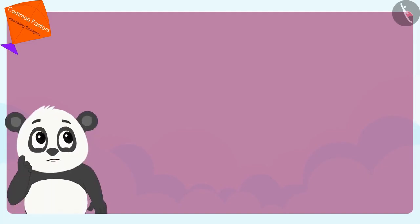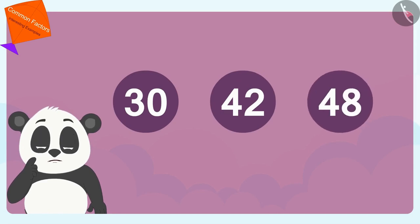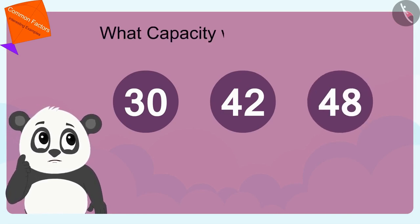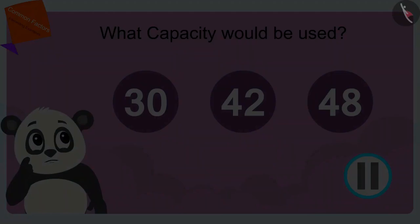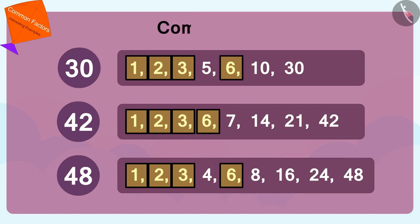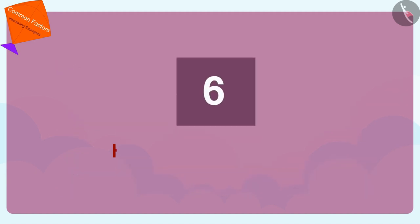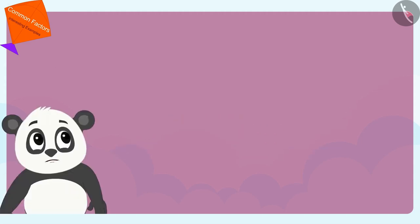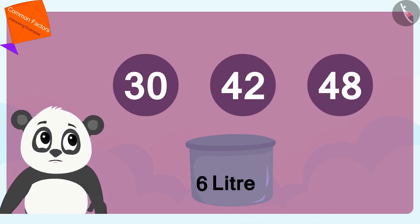Children, if Golu's pots were filled with 30, 42 and 48 liters of milk, can you tell what capacity would be used? If you want, you can pause the video and find the answer. 1, 2, 3 and 6 are the common factors of 30, 42 and 48. Out of them, 6 is the highest number or the highest common factor. Therefore, Golu would use only a 6 liter pot to measure 30, 42 and 48 liters of milk.